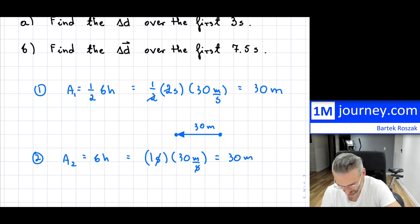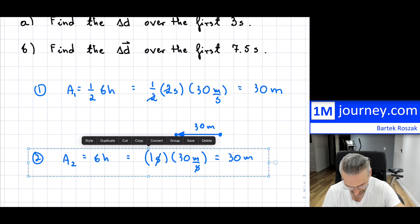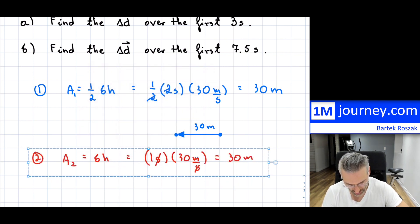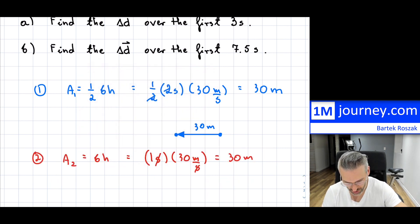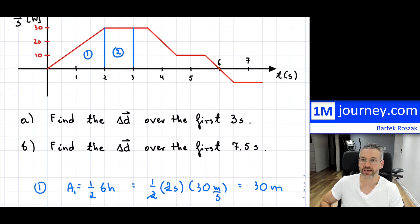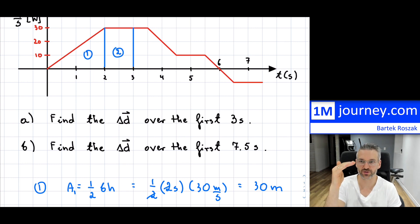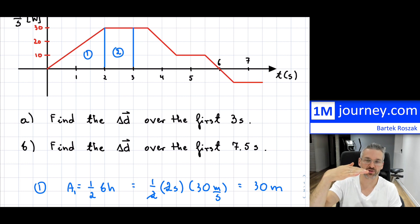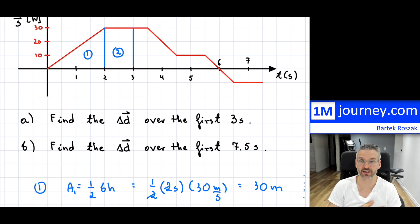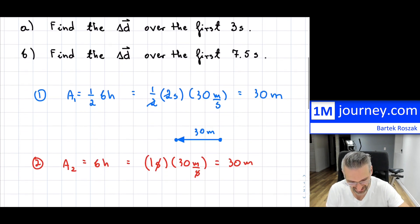I'm going to duplicate this and change the color to red. What this means is it looks like we were speeding up — going faster and faster for the first two seconds. Then it's flat, so we're going at 30 meters per second for a second — we're not speeding up or slowing down.